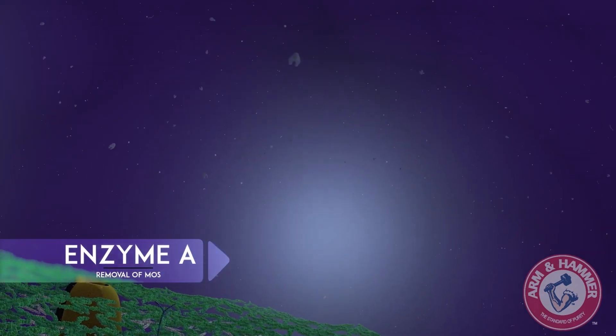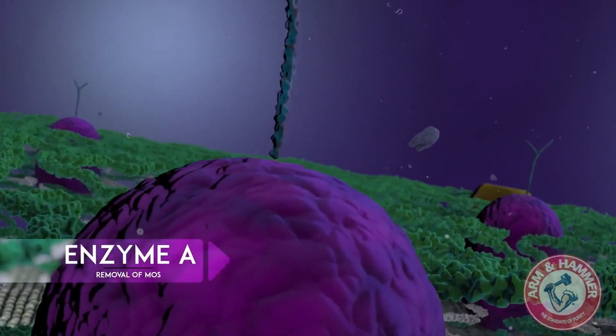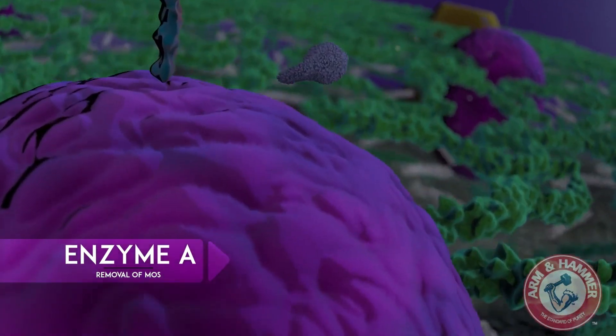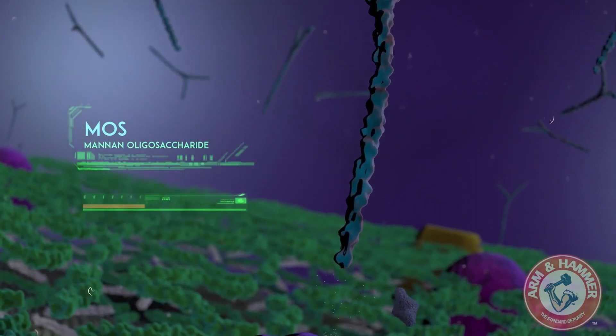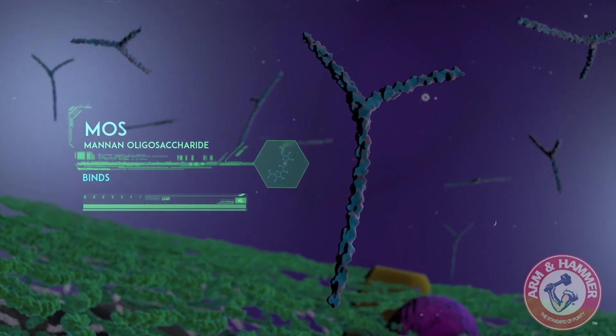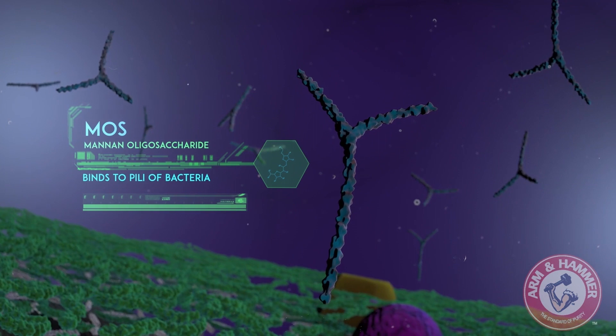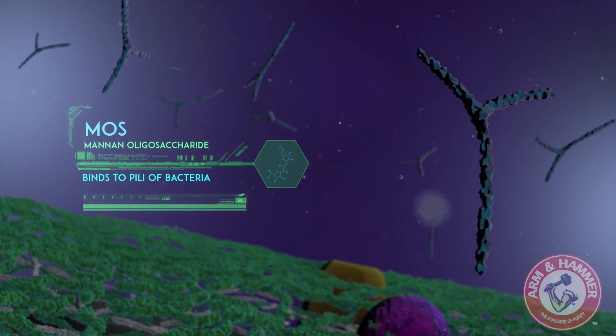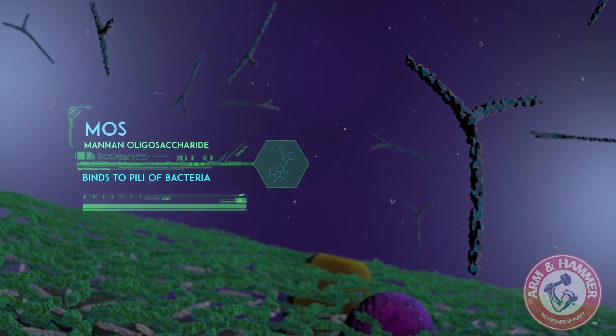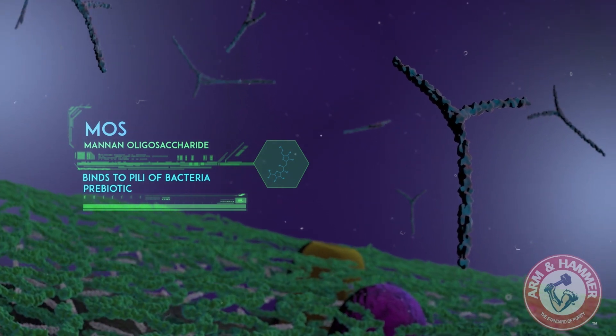After establishing the proper environment, we introduce an enzyme specific to unlocking mannan oligosaccharide from the yeast cell wall. Mannan oligosaccharide has the ability to bind to the pili of certain disease-causing bacteria such as E. coli and Salmonella, a constant risk for livestock. Secondly, this long sugar chain has a prebiotic effect.